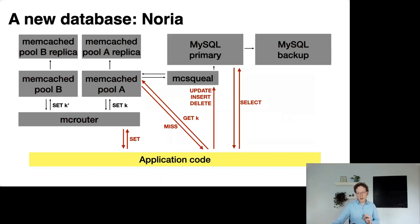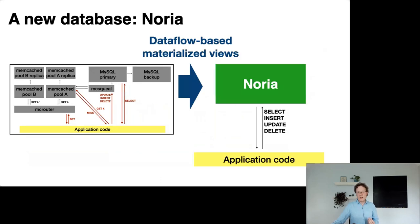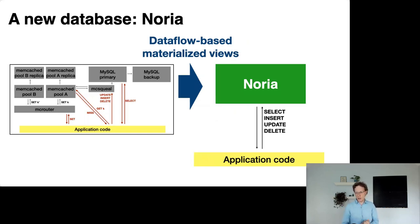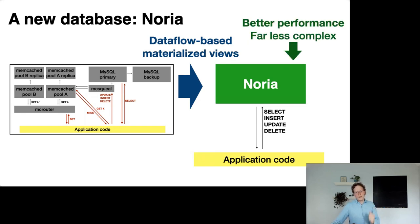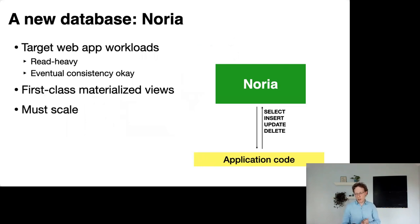What I'm going to show you is how we can take this complexity and use a new database — a system called NARIA — based around the abstraction of data flow-structured, incremental, updated materialized views. This takes away complexity from the application developer who simply uses SQL queries like they used to, but gets the performance of a caching key-value store backend. The overall goal of NARIA is to reduce complexity while delivering equal or better performance. NARIA targets web application workloads: extremely read-heavy, mostly point queries satisfied from indexes, and eventual consistency is acceptable.